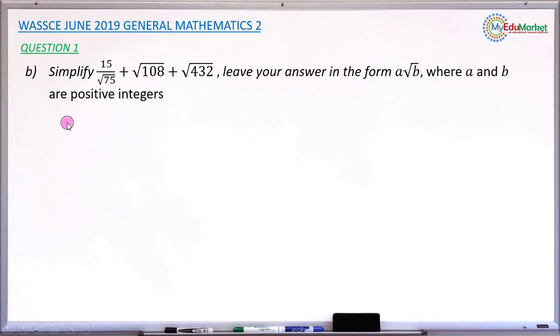So let's attempt to answer this very question together. Solution to the problem: what you do first is to copy the given task to simplify, that is 15 divided by root 75 plus root 108 plus root 432. So what you need to do is to simplify each, like root 75 can be simplified further. 108 also, check whether you can simplify it, similarly 432, check whether you can simplify it to simplest form.